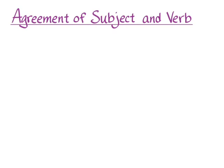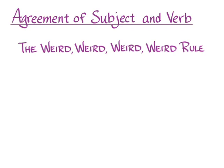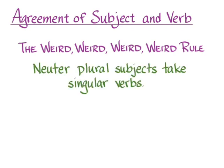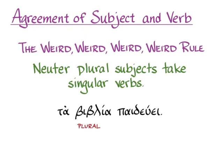But there is something in Greek I've come to call the weird weird weird rule: neuter plural subjects in Greek take singular verbs. Nobody knows quite why this is true, but it is the case. So we can have a sentence like 'ta biblia paidewe' — a plural neuter subject 'ta biblia' with a singular verb 'paidewe' — and that means 'the books educate' in English.